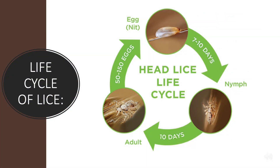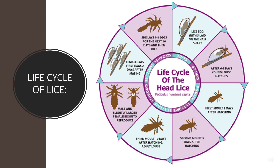Life cycle of lice: nits (eggs) convert into nymphs within 7 to 10 days; nymphs convert into adult lice within 10 days; adults lay eggs within 50 to 150 days. The male and female begin to reproduce; the female lays her first eggs 2 days after mating, lays 4 to 8 eggs over the next 16 days, and then dies. Nits are laid on the hair shaft and after 6 to 7 days a young louse hatches, molting after different days of hatching.